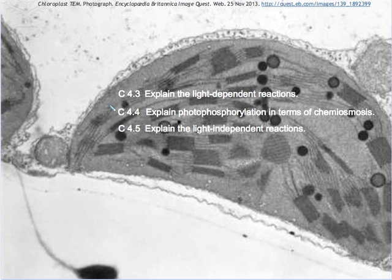Welcome. Today's lesson is made especially for IB Biology SL Option C and HL extension material: 4.3 explain the light-dependent reactions, 4.4 explain photophosphorylation in terms of chemiosmosis, and 4.5 explain the light-independent reactions.